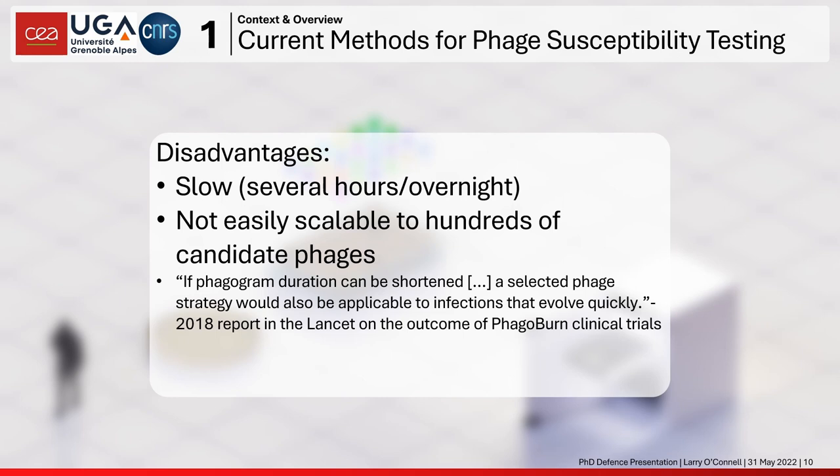What would be best is a way of carrying out phage susceptibility testing that is more rapid and physically compact. It's worth quoting the 2018 Lancet report on the Phagoburn clinical trials: 'If the phagogram duration can be shortened, a selected phage strategy would also be applicable to infections that evolve quickly.'